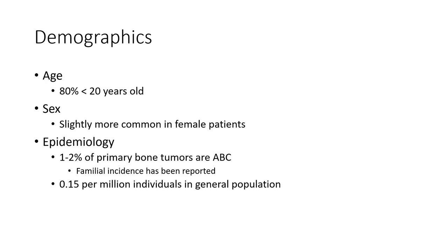Demographics: 80% of cases occur in patients less than 20 years old, and it is largely more common in female patients. Epidemiology: aneurysmal bone cyst represents 1-2% of primary bone tumors, with a familial incidence reported at 0.15 per million individuals in the general population.